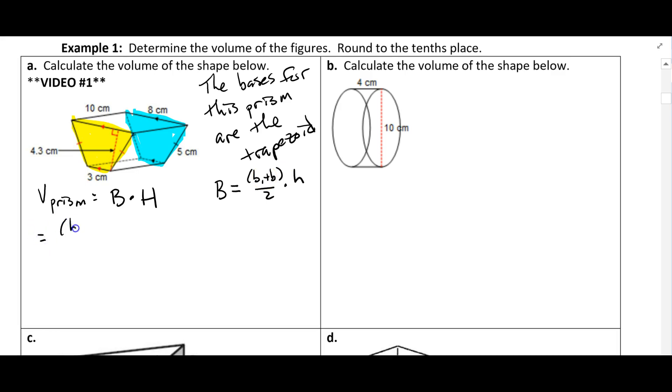So this volume is going to be B1 plus B2 divided by 2 times little h times big H. This capital H is the whole height of the prism. Let's go ahead and start substituting in values.